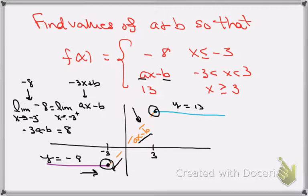For that side, I have the limit as x approaches 3 from the left. Well, what's the function from the left of that point? It's going to be the line ax minus b, and that has to be equal to the limit as x approaches 3 from the right.